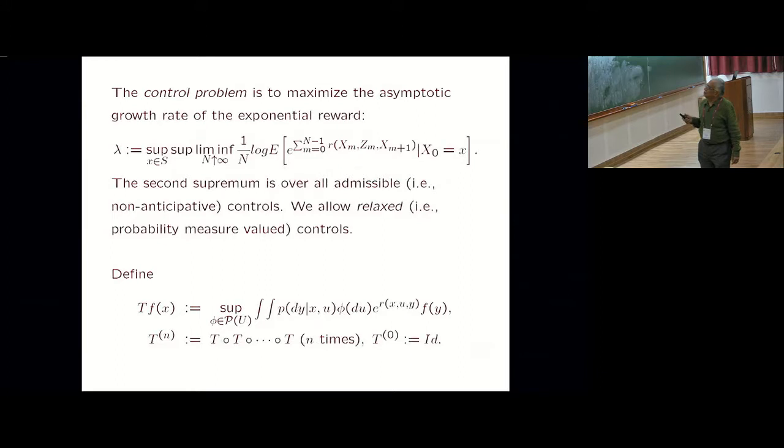The control problem is to maximize the asymptotic reward. This is called risk-sensitive reward. This is expected value of sum of, so this is the reward at time N. At time M, current state is X_M, next state is X_M+1, current control state. You take expected value, log 1 by N. The idea is that you want to maximize the limiting asymptotic growth rate.